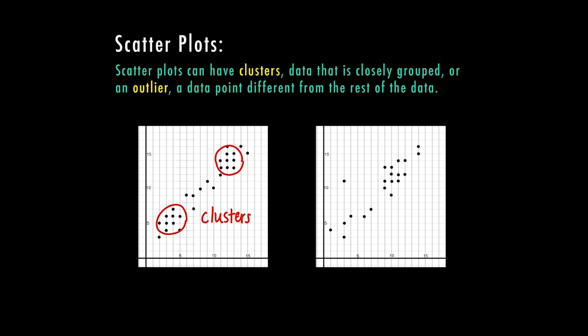Then if we look at our second graph here, again, our information as the x is increasing, the y is also increasing at a pretty steady rate. I have a cluster here, and then I also have this one out here by itself. This is the one that would be called an outlier.